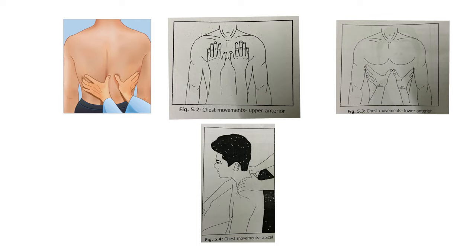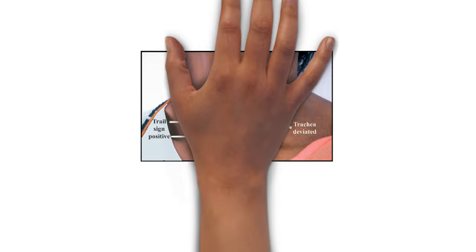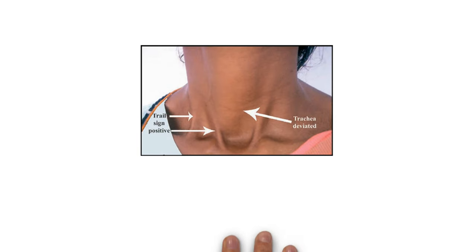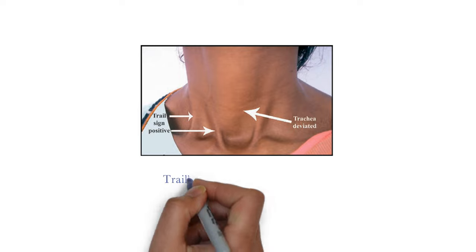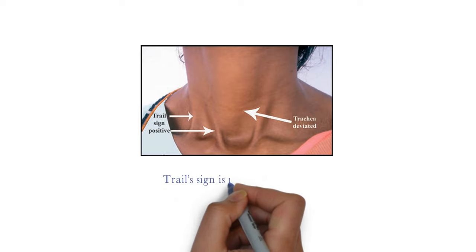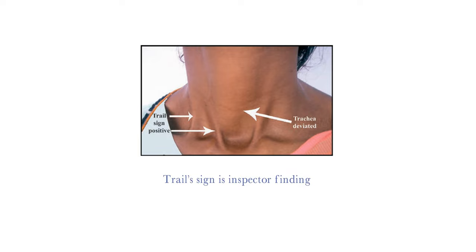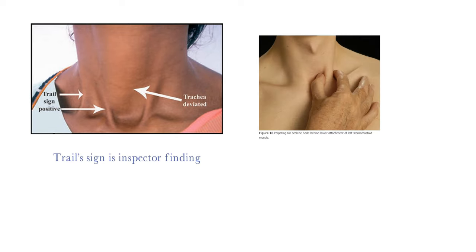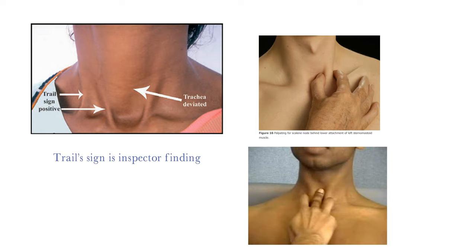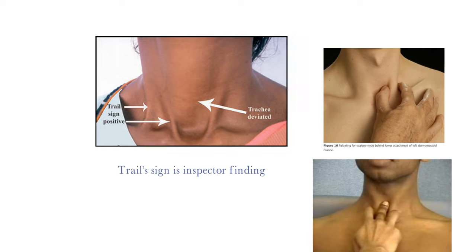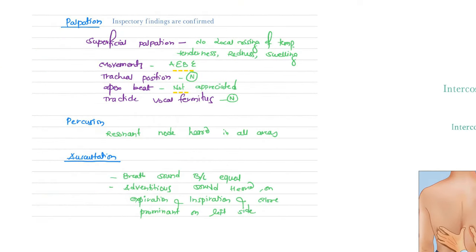Check tracheal position — normal in my patient. Note: tracheal sign is an inspectory finding, not a palpatory finding. Methods to palpate the trachea include the two-finger method and three-finger method. Check apex beat — not appreciated in my patient. Tactile vocal fremitus is normal.